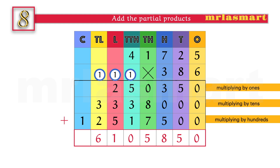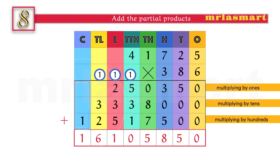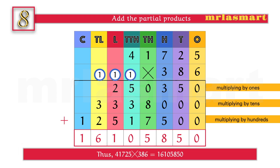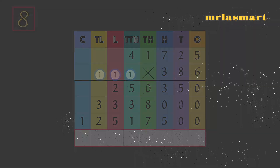Thus, 41,725 multiplied by 386 equals 16,105,850.